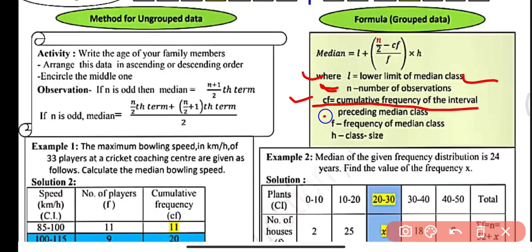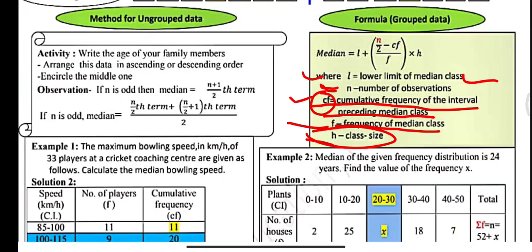The cumulative frequency cf is the summation of all frequencies of the classes before the median class. f is the frequency of the median class, and h is the class size — that is, the class height or width of the class interval. Now we have two examples to solve.